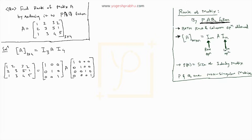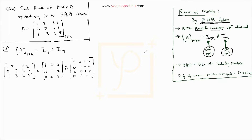One important point to note: we are allowed to perform both row and column operations. When we perform row operations on matrix A, we will also do those operations on I_M. And whenever we perform column operations, we will apply those on I_N, the second identity matrix. So let us begin.